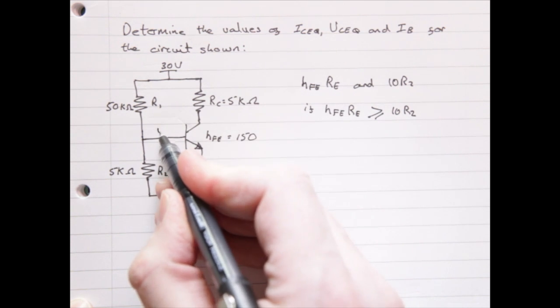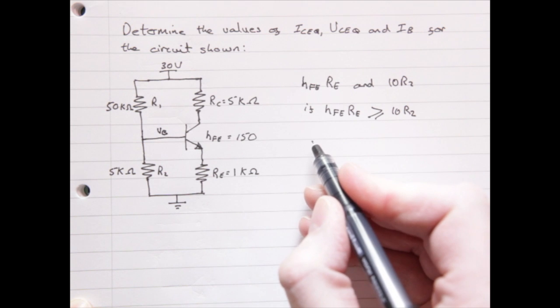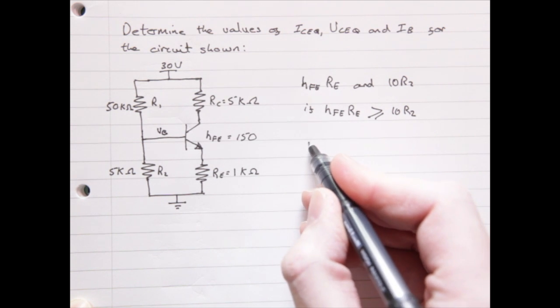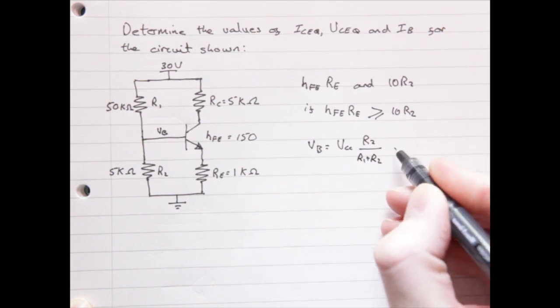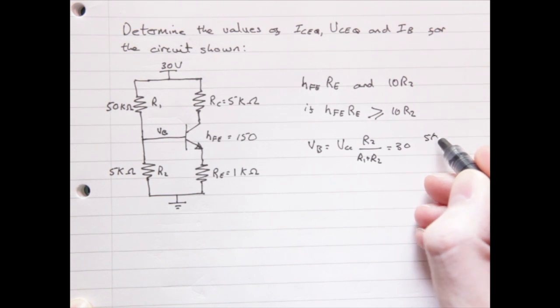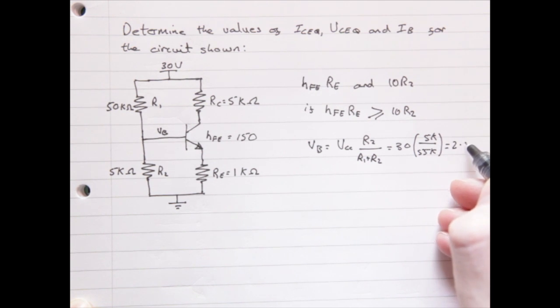So, our first step will be to calculate the voltage at VB. Well, we already know that it's a potential divider circuit, therefore, by using our potential divider formula, as illustrated here, we're able to calculate the voltage at VB. This gives us a value of 2.73 volts.